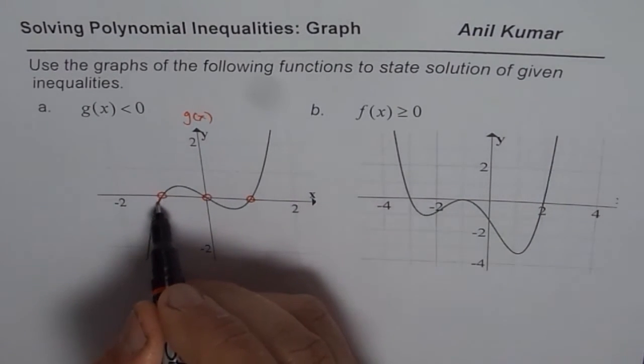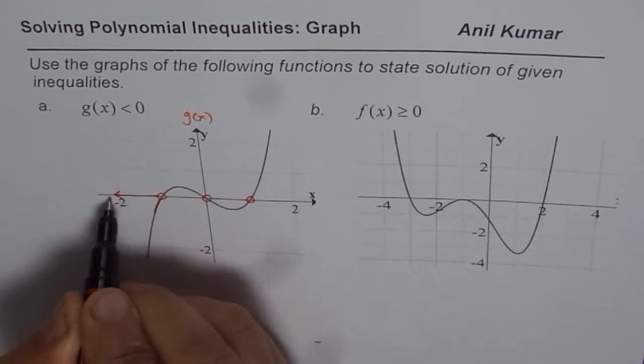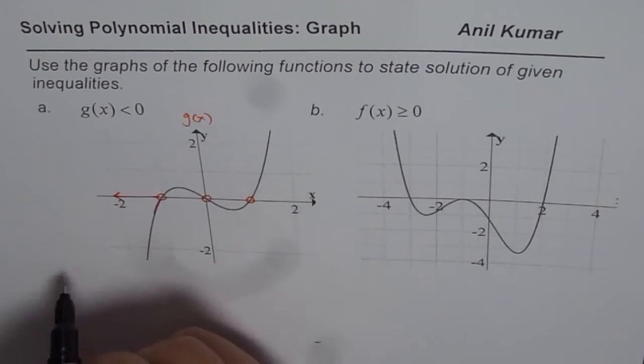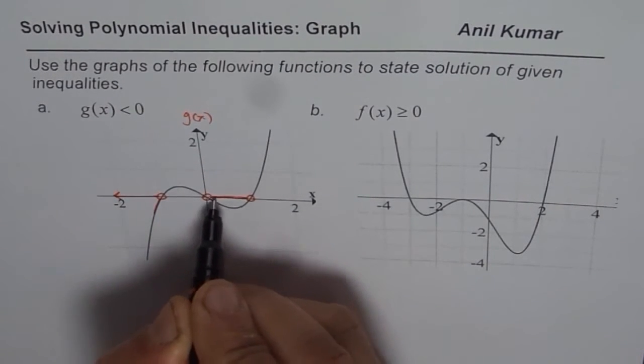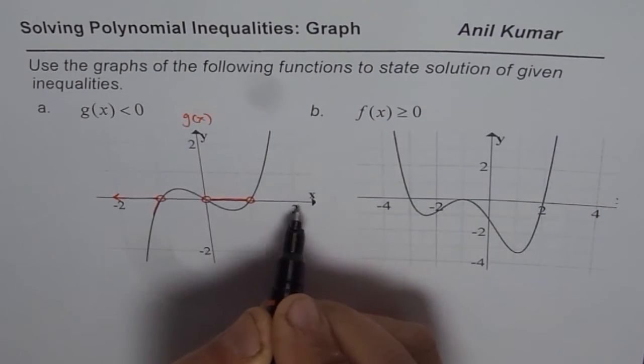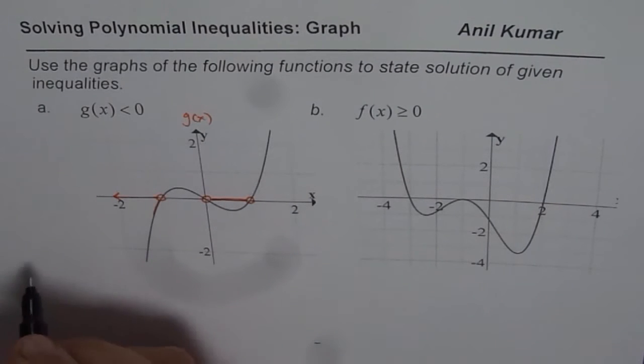when we say g of x is less than 0 that means something which is negative, below x axis. So this is this part. So on the x axis we can draw the arrow like this. So that indicates the solution because that is when g of x is less than 0. Now based on what I have shown you on the graph we can write our solution.